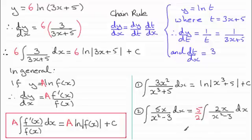And so what I end up with then as my final result is 5 over 2 multiplied by the natural log of the modulus then of x² minus 3. And then again, plus that constant of integration c.